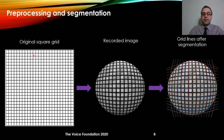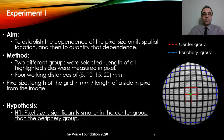In the original image we see that all of the lines are parallel to each other. However, in the final image after segmentation, we see that the parallel lines are becoming bent and bowed, and they are no longer parallel with each other. The aim of experiment one was to establish the dependence of pixel size on its spatial location and to quantify that. For this experiment we created two different groups: one group corresponded to blocks in the center, and the other to blocks on the periphery. We ran the experiment for four different working distances of 5, 10, 15, and 20 millimeters.